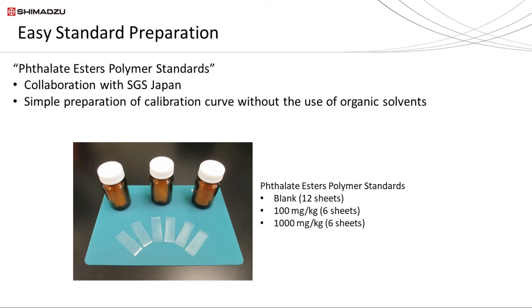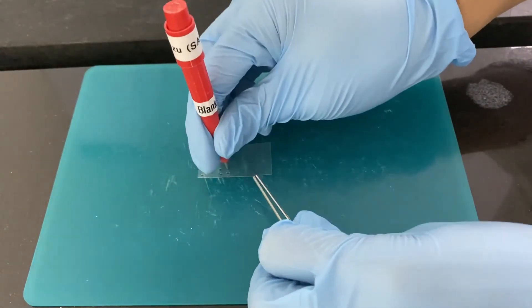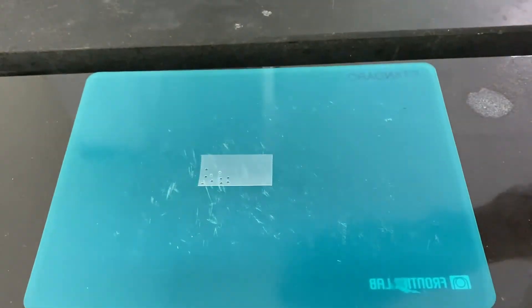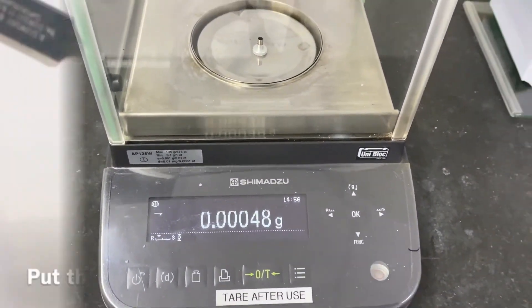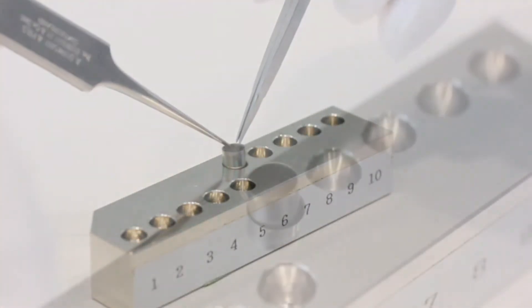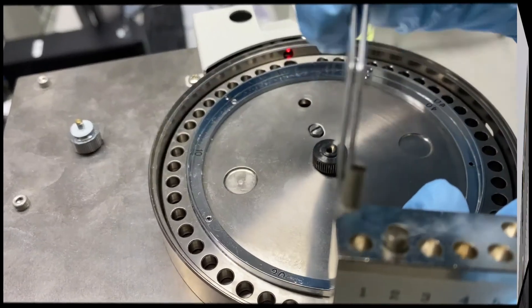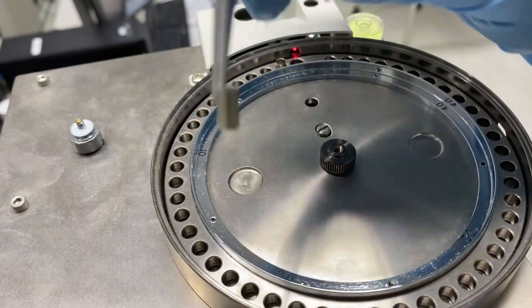The Shimadzu phthalate ester standard is designed for simple preparation to reduce preparation time. No organic solvent is required for phthalate ester standard preparation. It comes in three different concentrations for quality control checks and to build a calibration curve. The standards come in ribbon shape with fixed thickness. A special puncher tool called a micro puncher with a fixed diameter is used to punch out a hole on the standard. You only need to punch it two times to meet the weight requirement. Then record the weight, cover the sample with wool, load the sample cup onto the system, and start the sample analysis.